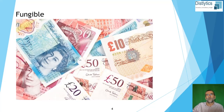Also, that £5 note can be used for multiple purposes — it can buy coffee, bread, pay for someone's time or whatever. The same applies to cryptocurrencies such as Bitcoin and Ethereum. With both of these, you own an amount and not a specific coin.